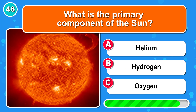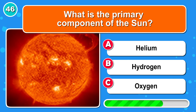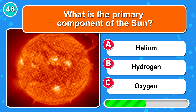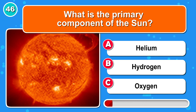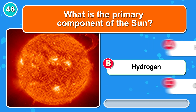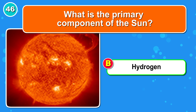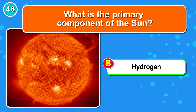What is the primary component of the sun? That's right, it's B: hydrogen.